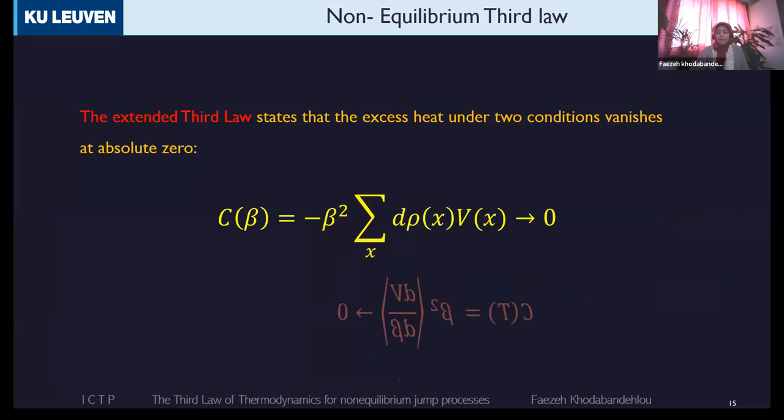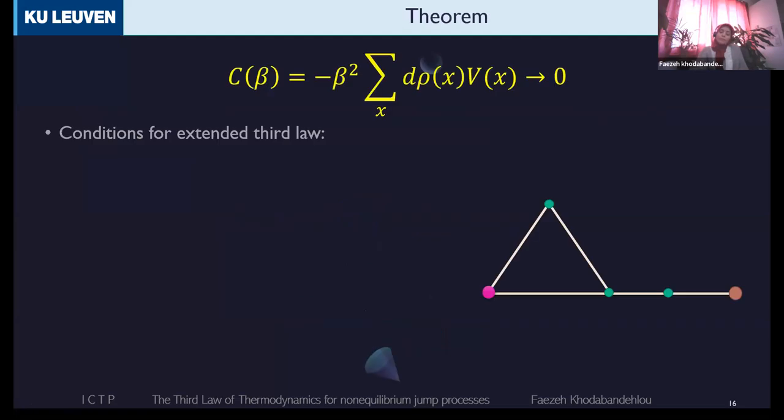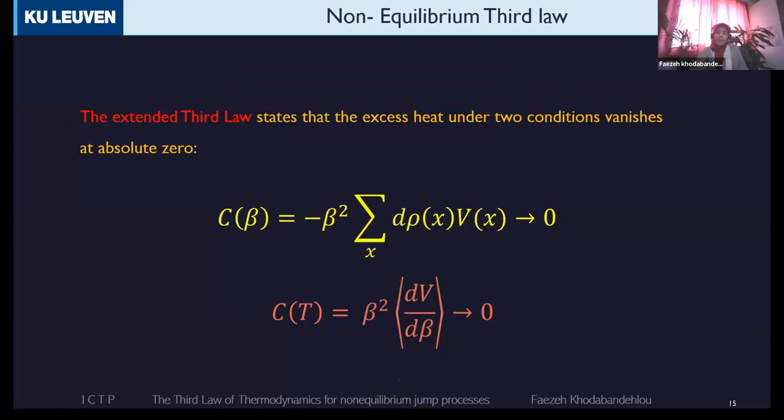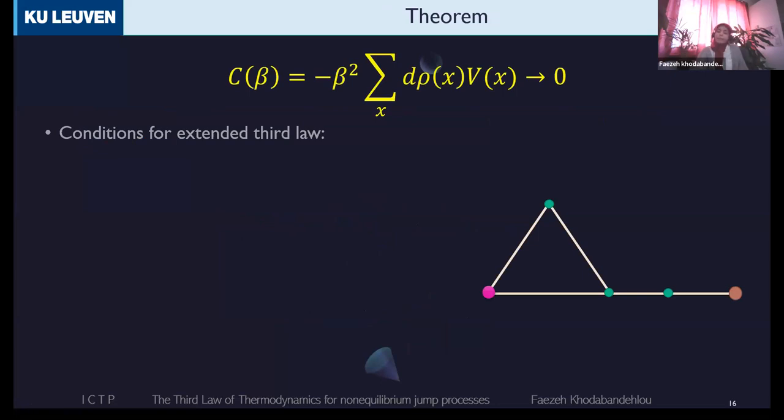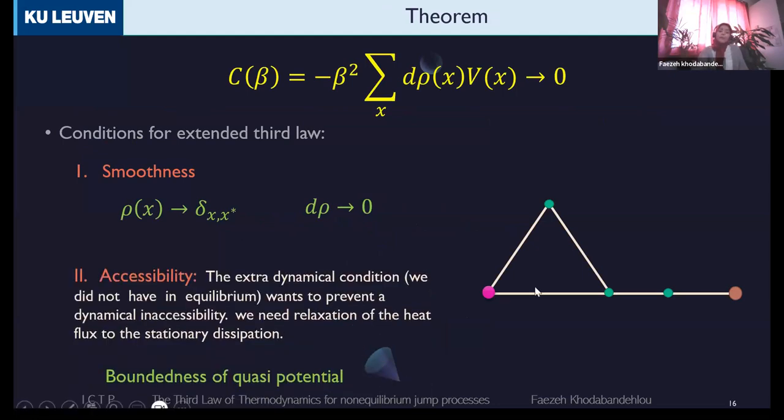And what is the main theorem? The extended third law in non-equilibrium is telling that heat capacity is going to zero as well, the heat capacity that we define. And I just opened this mean as nothing special, and it's just that they are equal to each other. We want to tell that in two conditions, this heat capacity, when temperature is going to zero, it's going to zero. Just remember that in equilibrium, we have one condition. And now in non-equilibrium, we have two conditions.